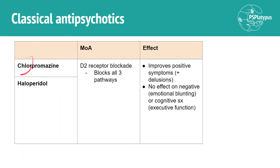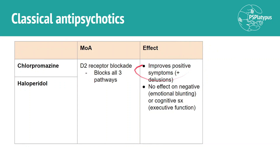For classical antipsychotics, you have chlorpromazine and haloperidol. The effect they have is that they improve positive symptoms. Positive symptoms are symptoms that are added on; negative symptoms are things that are taken away; and cognitive symptoms refer to things like executive function and memory. Positive symptoms include hallucinations and delusions. Classical antipsychotics only really improve positive symptoms — there's no effect on negative symptoms like emotional blunting, social withdrawal, or cognitive symptoms.